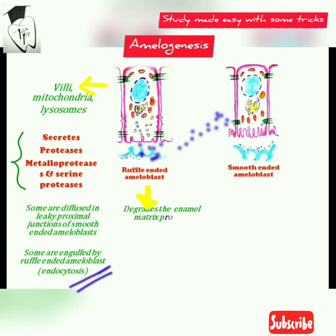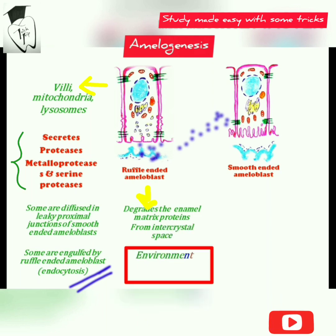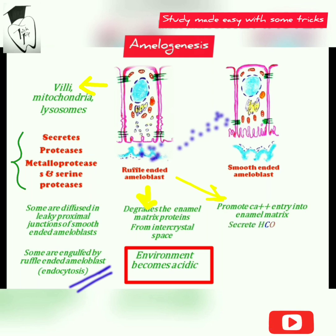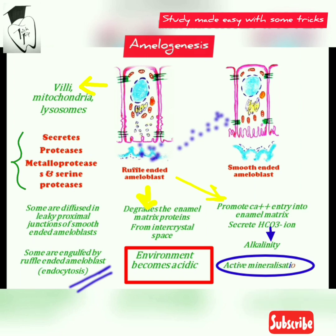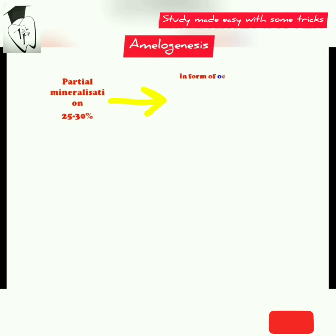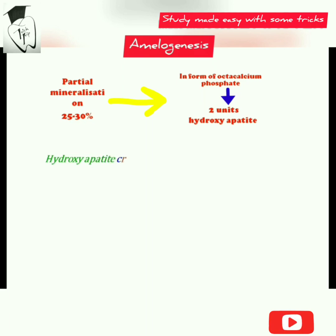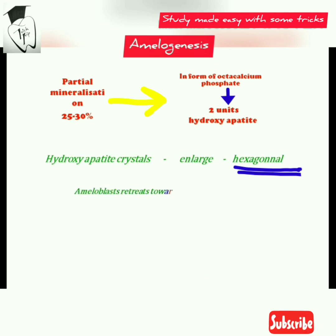These enzymes degrade enamel matrix proteins from the intercrystal space, creating an acidic environment. They also promote calcium ion entry into the enamel matrix by secreting bicarbonate ions, converting the acidic environment to alkaline, initiating mineralization. Partial mineralization of 25 to 30 percent occurs in the form of octacalcium phosphate, which gives two units of hydroxyapatite. The hydroxyapatite crystals enlarge and become hexagonal. The ameloblasts retreat toward the surface at an angle, and since the matrix is partially calcified, this retreating movement causes prism formation.